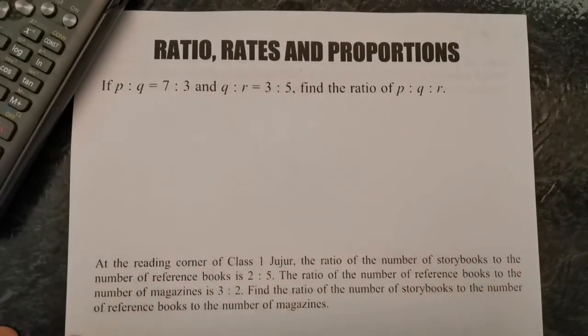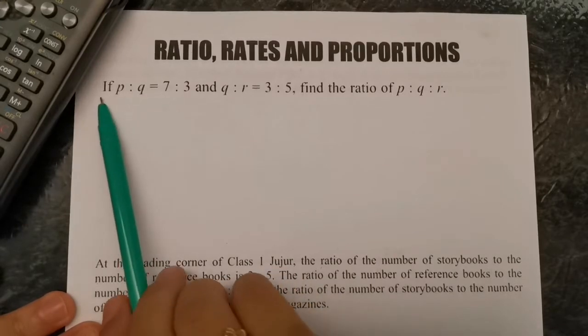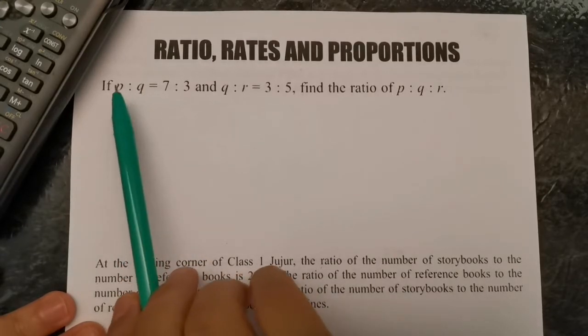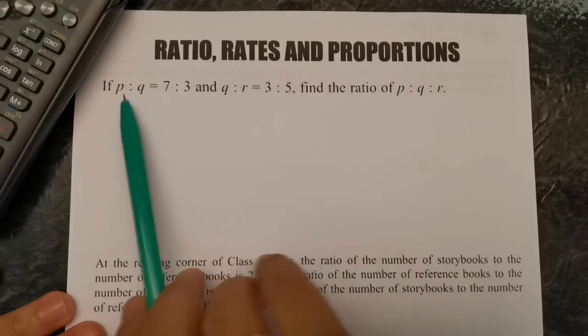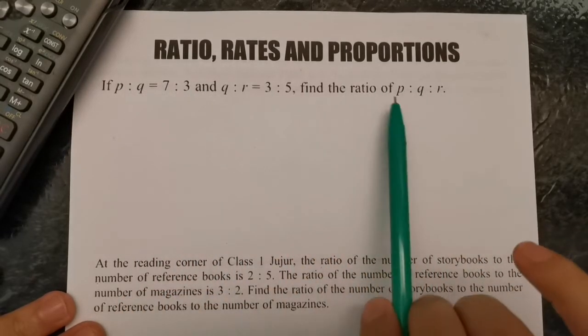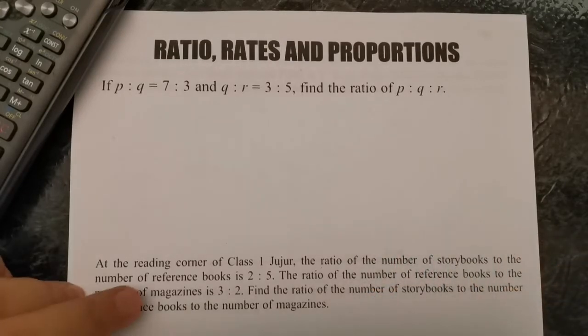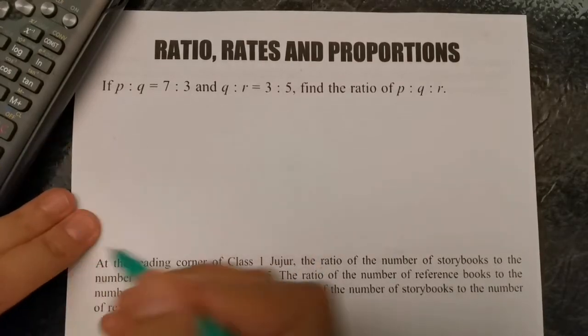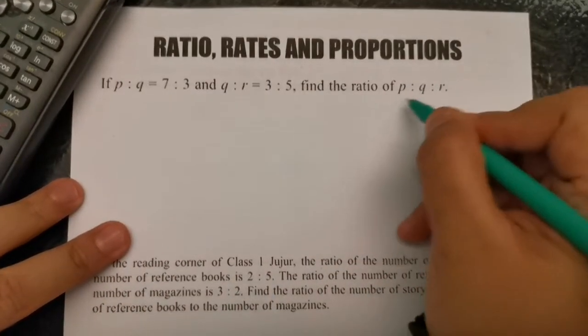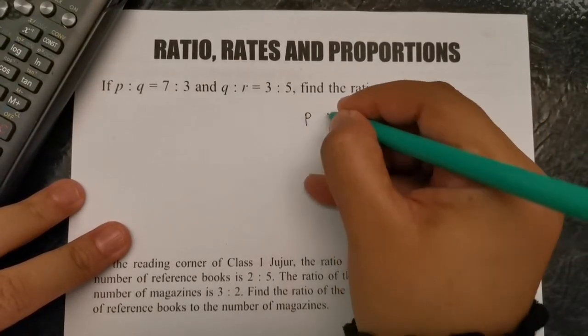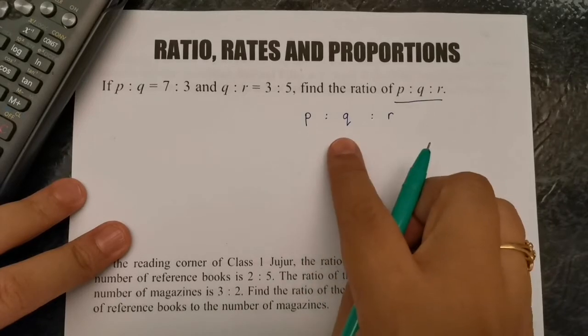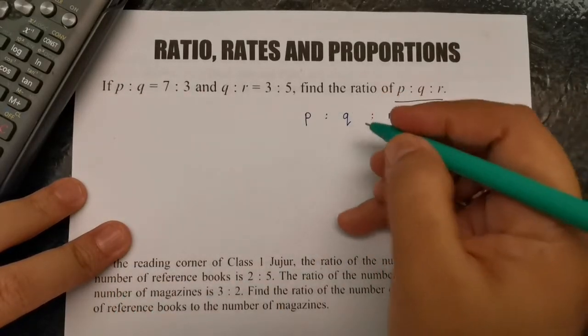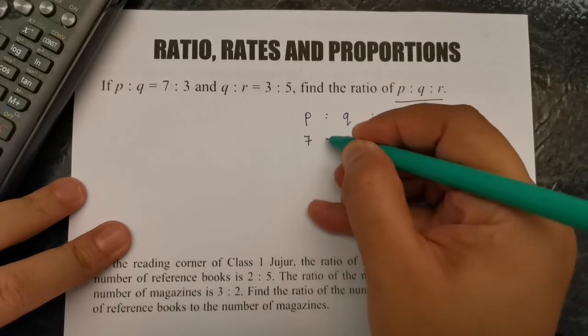First question, it gives two ratios and asks us to combine them. The tip is easy. First of all, look at the question: p:q:r. So p to the ratio of q and then ratio of r. We put in the information given - p:q is 7:3.